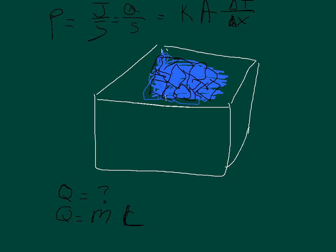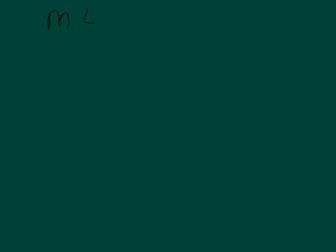We have the time, we have the area, we have everything else. We just have to set the mass times the latent heat over seconds equal to the thermal conductivity times the surface area times the change of temperature over the thickness of the styrofoam. All we have to do is solve for the thermal conductivity K.